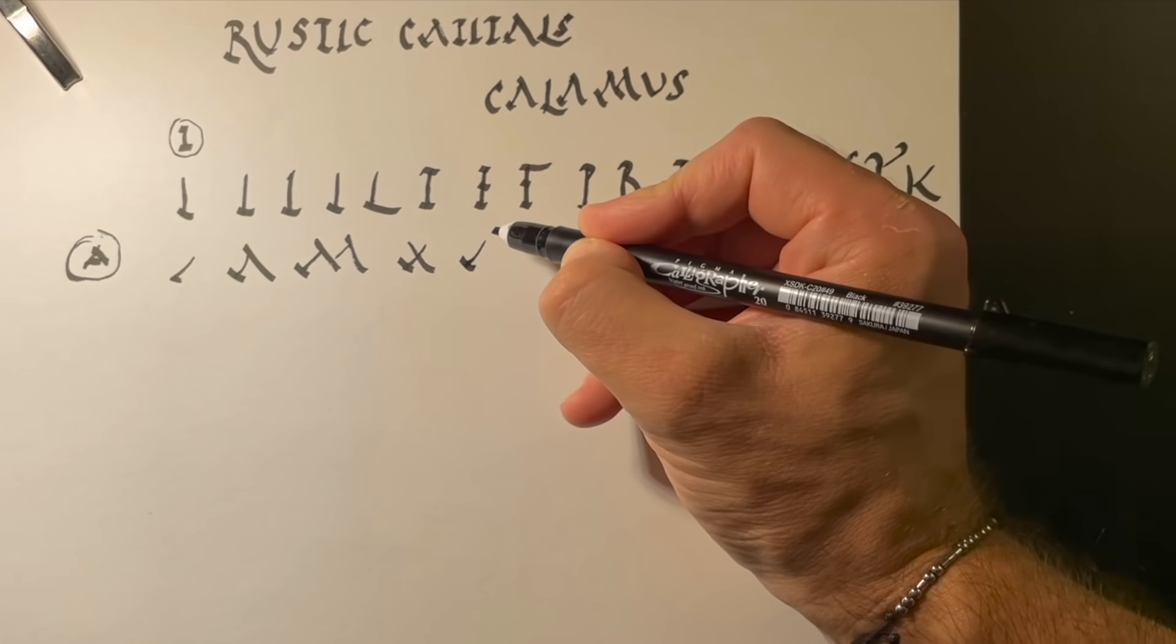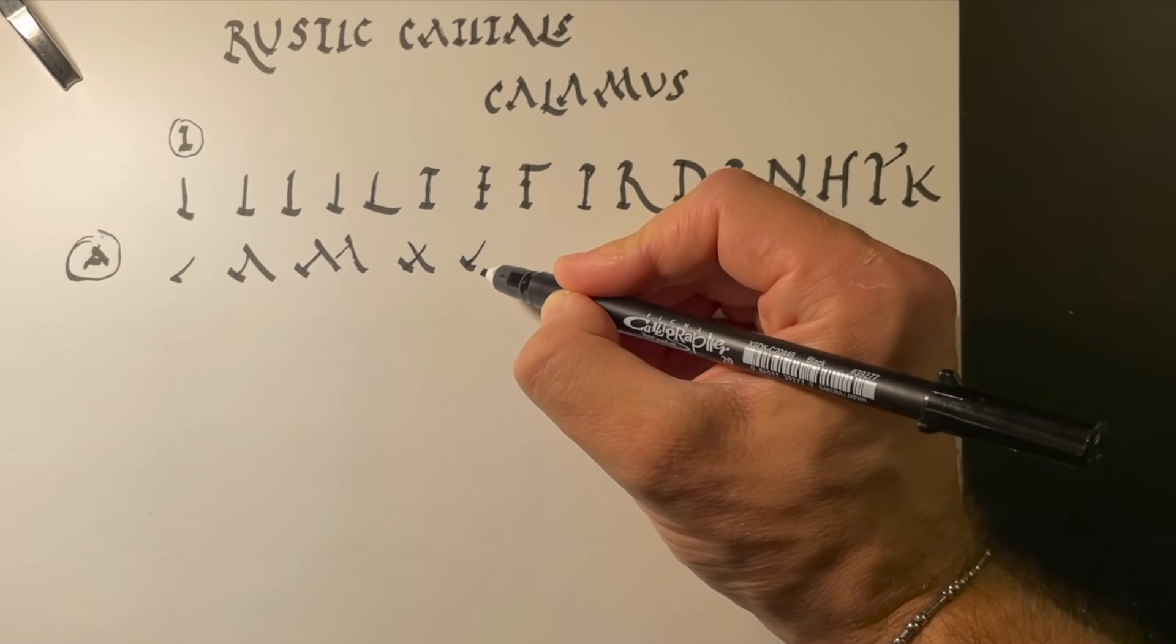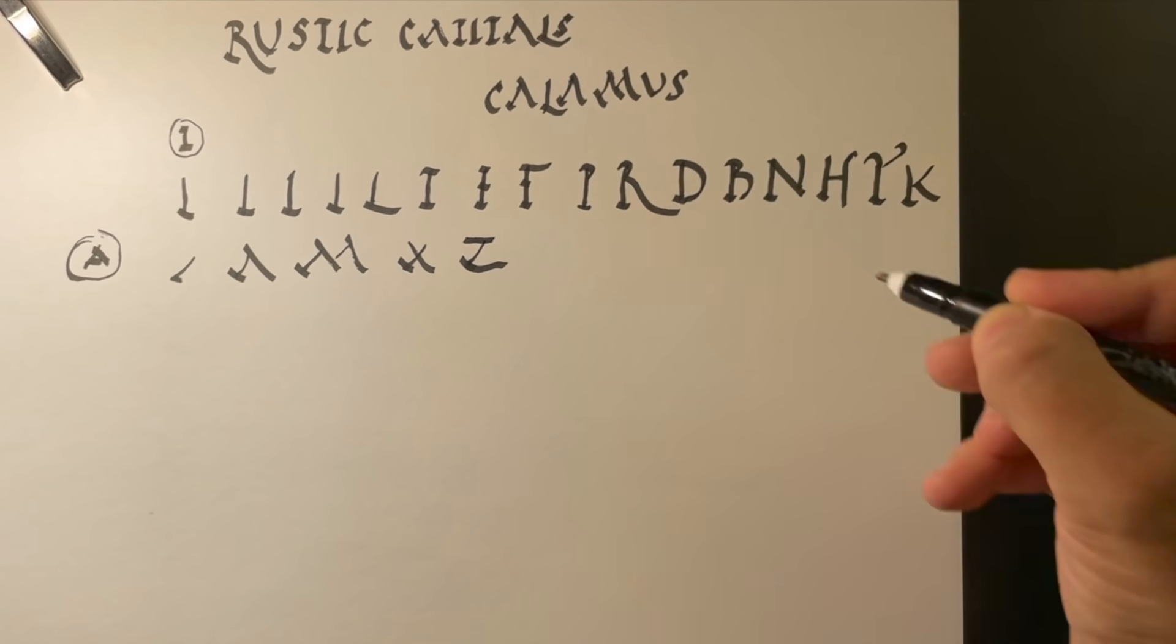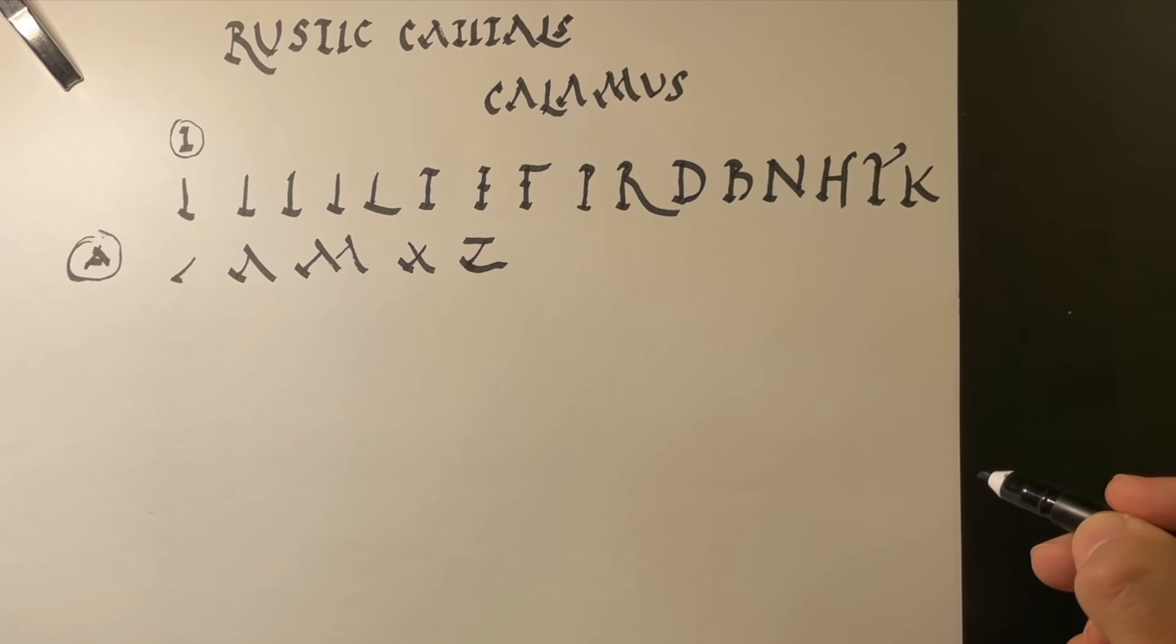And if we want a letter Z, we start with that. In fact, we want it to be longer, right? And then we cross the top and we get a letter Z.